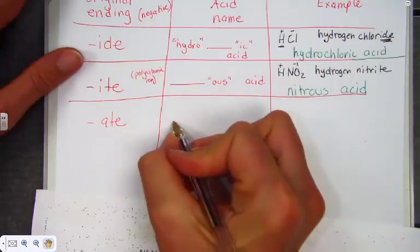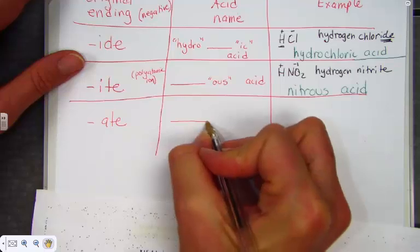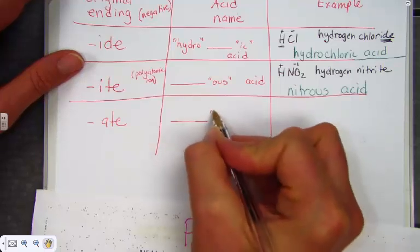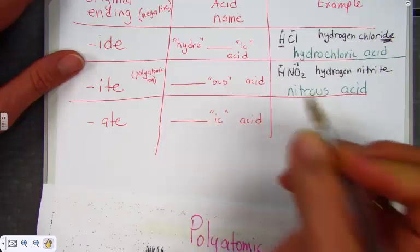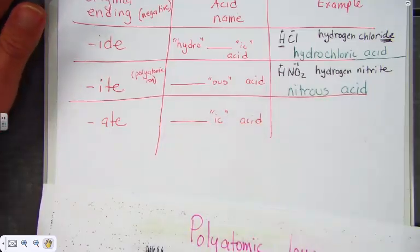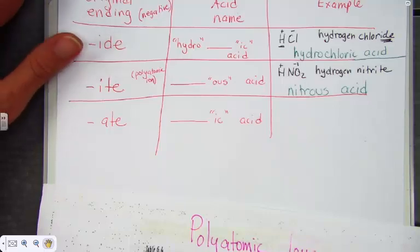Now, to name some negative ion correctly as an acid, do not say hydro. -ate simply turns to -ic and we get acid. -ate turns to -ic. Let's model that.